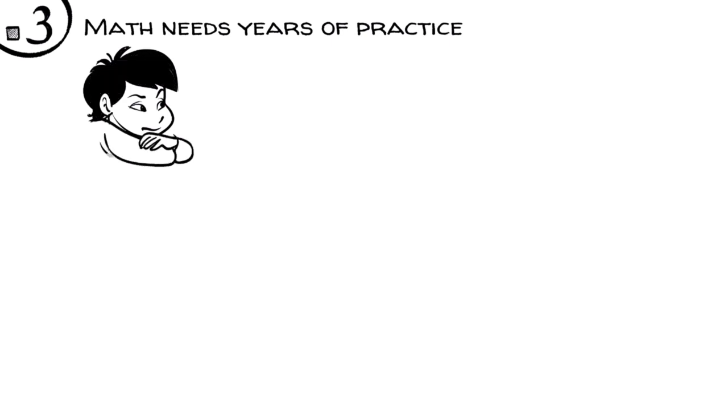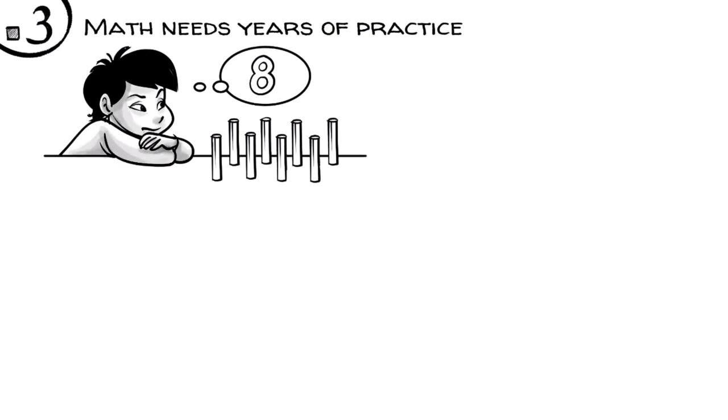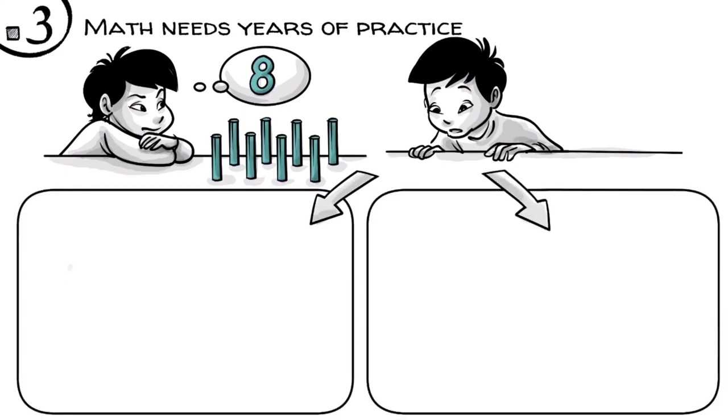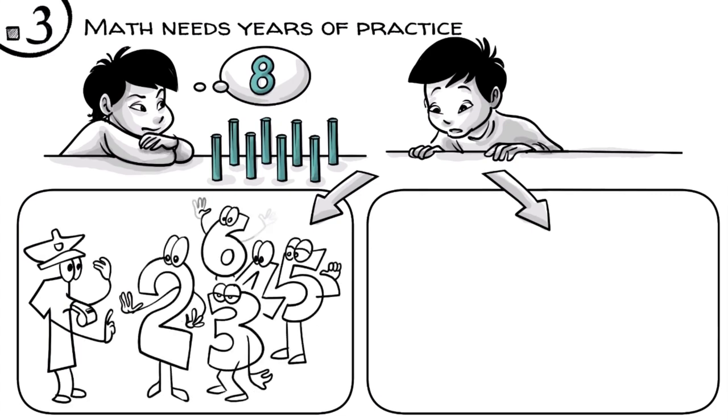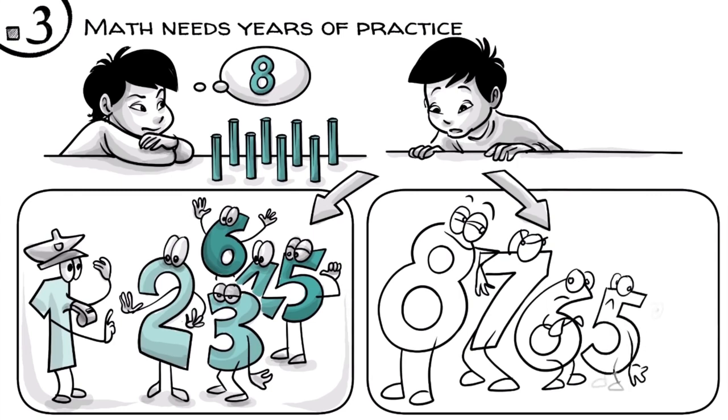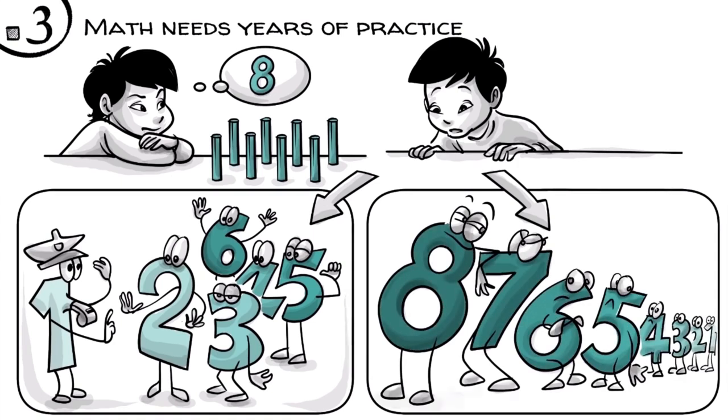Math needs years of practice. This becomes clear when we look at how children learn to understand a number, say eight. Not the symbol eight, but the idea of the quantity of eight. To internalize this seemingly simple idea, children need a lot of practice in two skills. First, they need to learn how to create order, and then, later on, how to create hierarchical relationships.